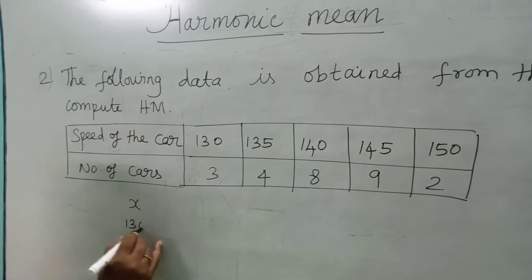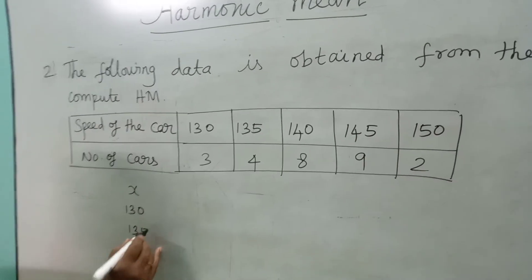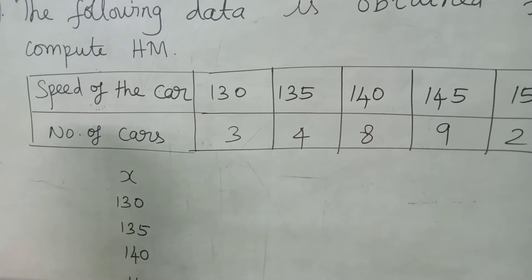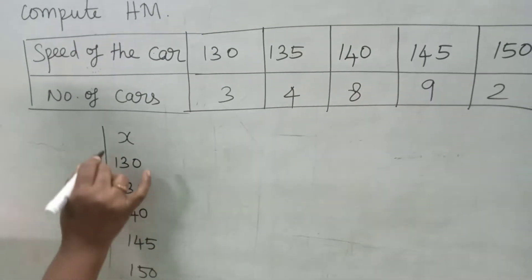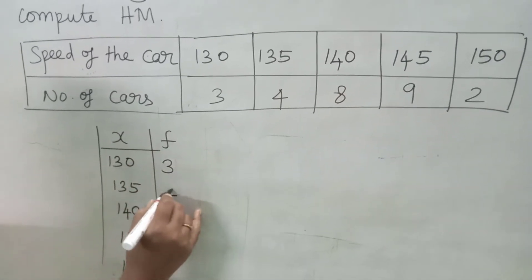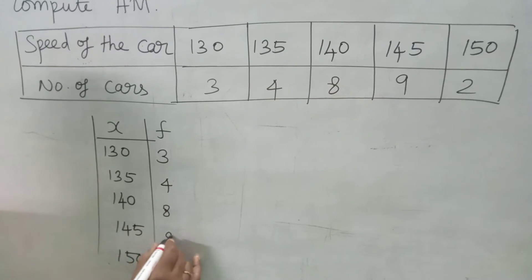X values are 130, 135, 140, 145 and 150. The corresponding frequencies are 3, 4, 8, 9, 2.